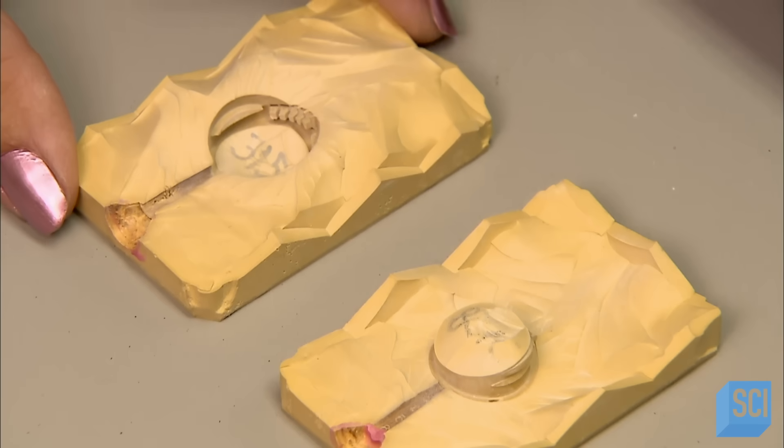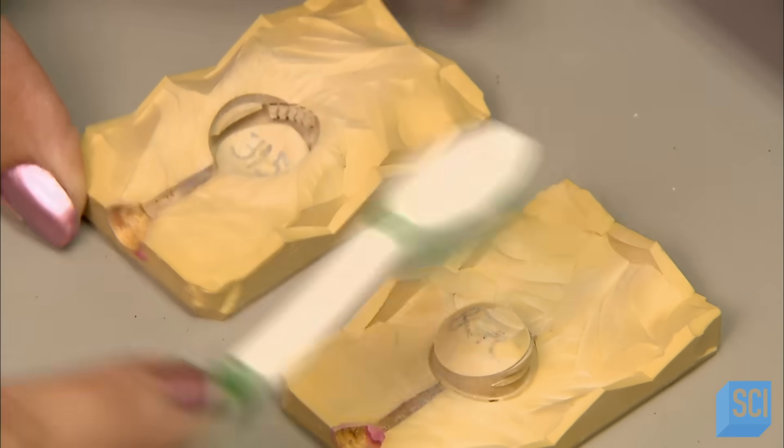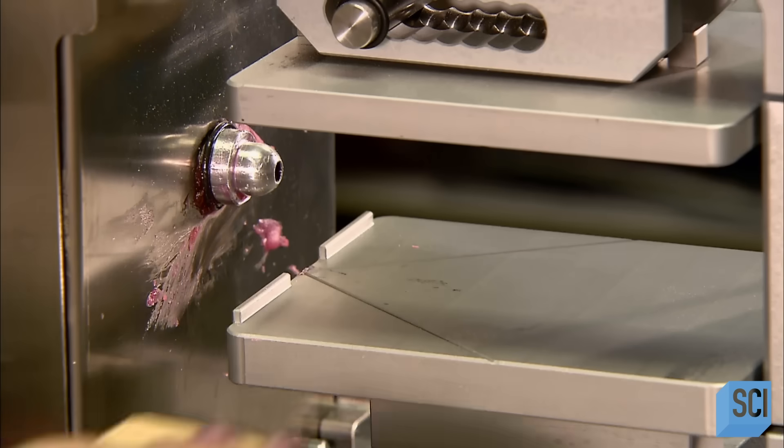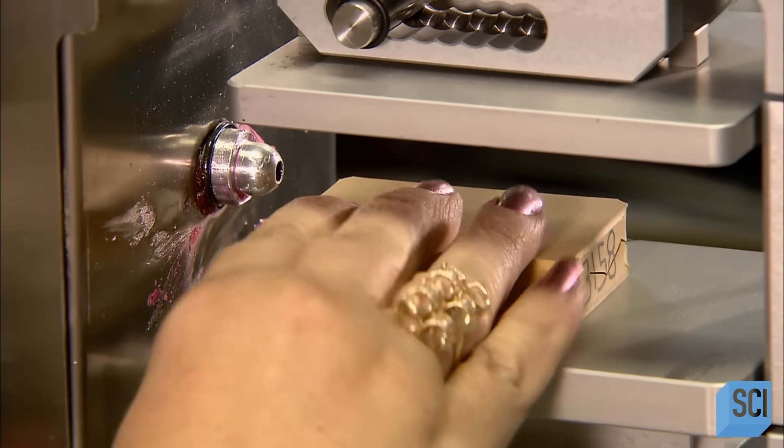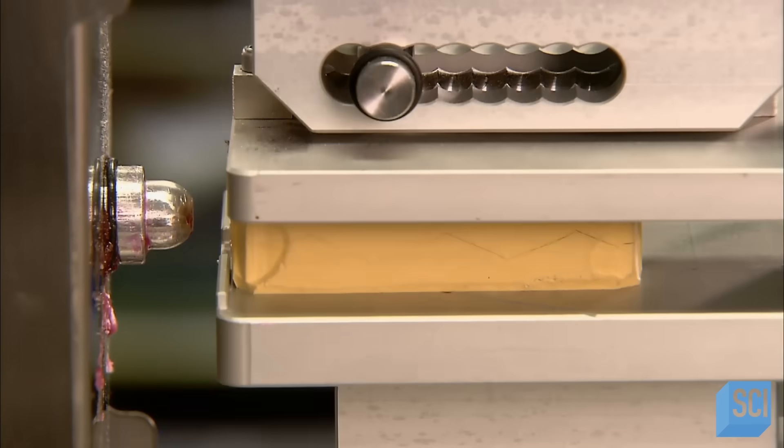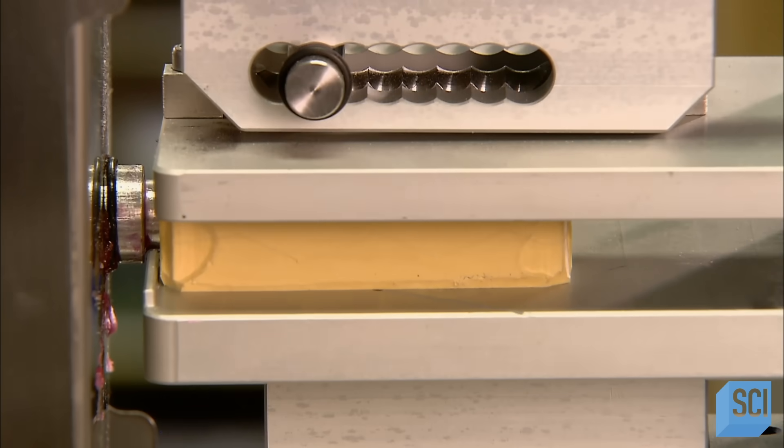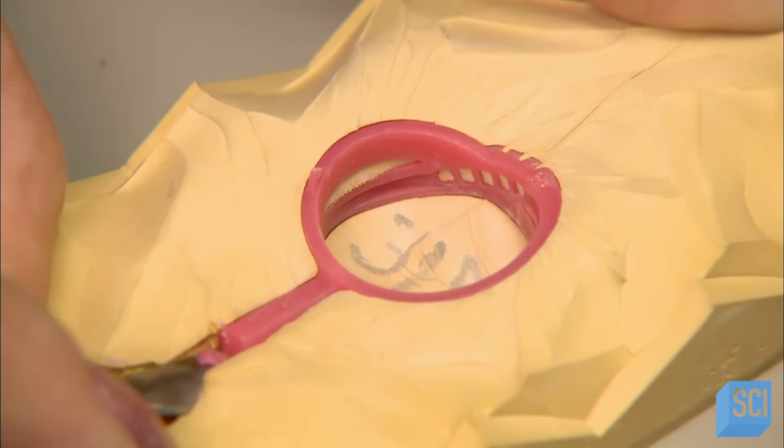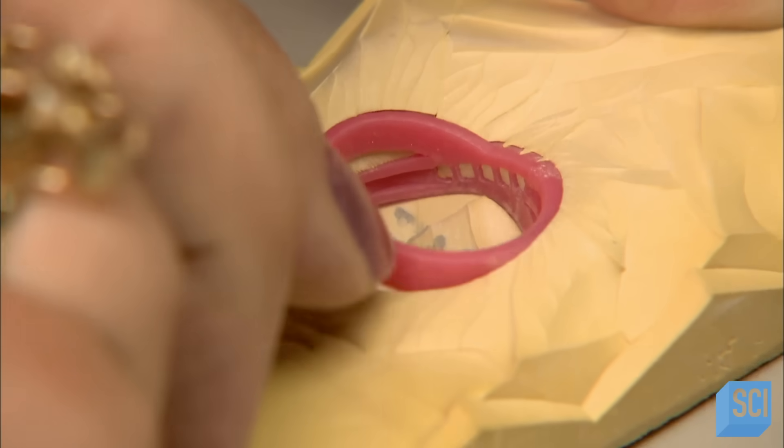To make a wax model of the ring's base, they use a flexible rubber mold, because it would be too difficult to extract the three-dimensional shape from a metal mold. They inject the wax at low pressure, as a rubber mold can't withstand high-pressure injection, nor is it necessary when the base has no intricate details.